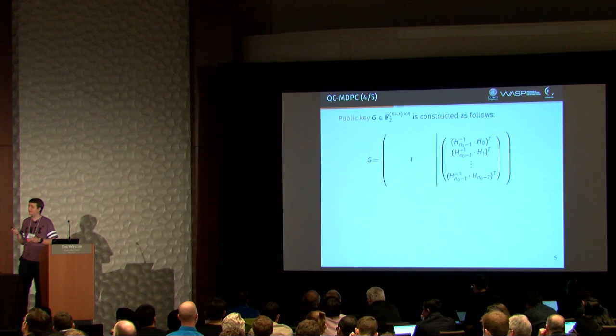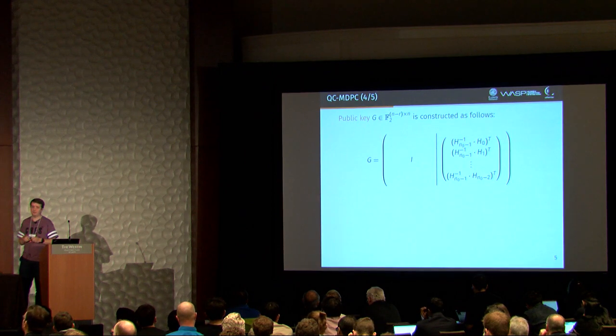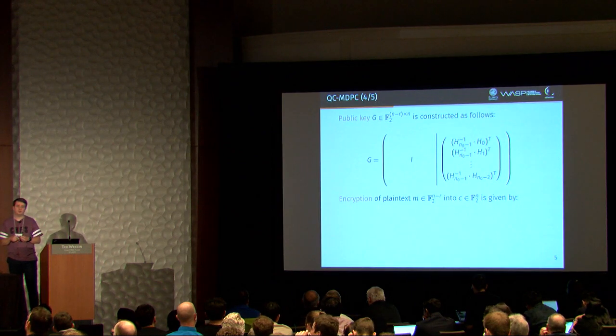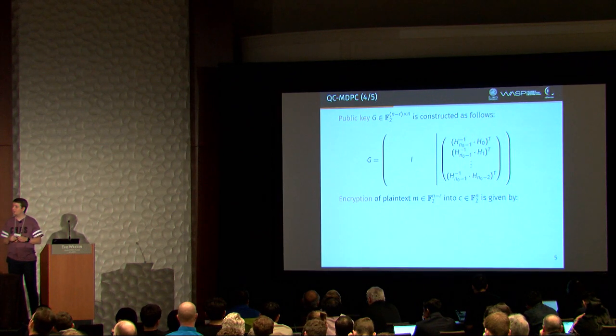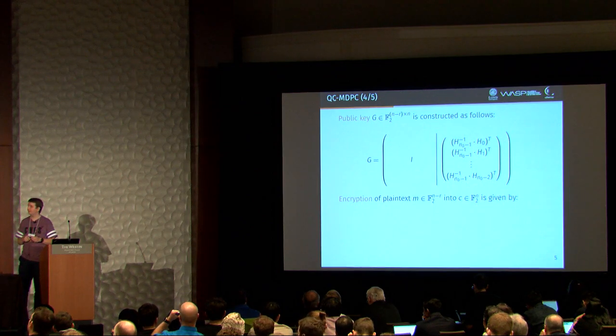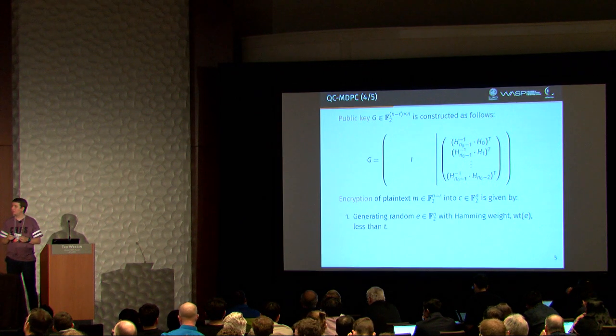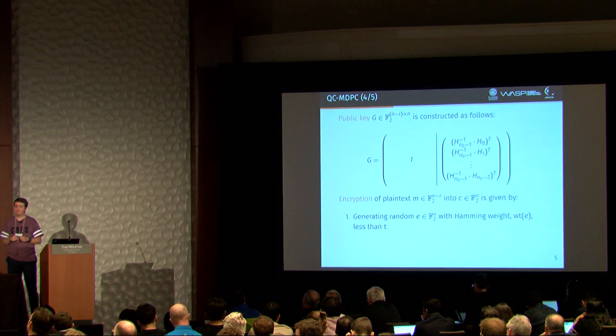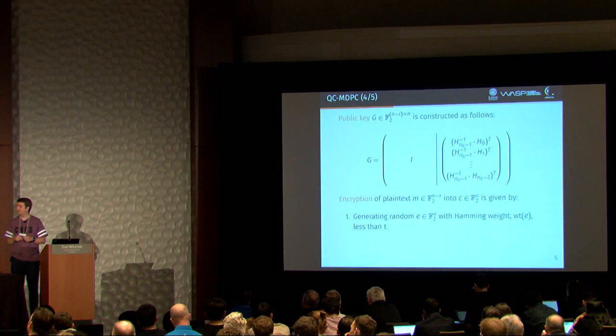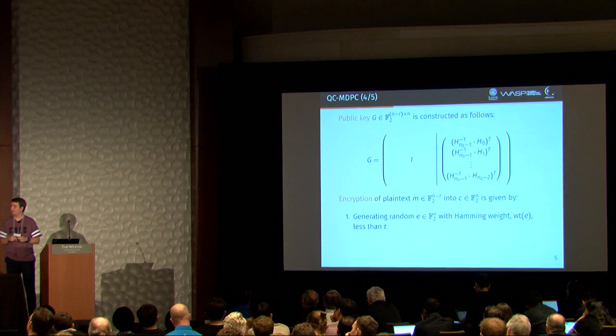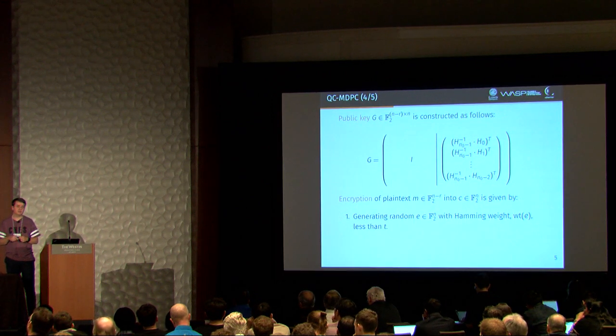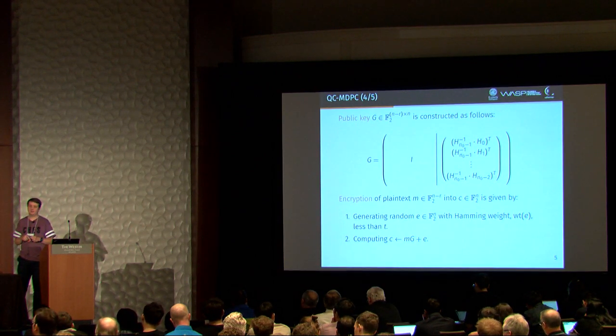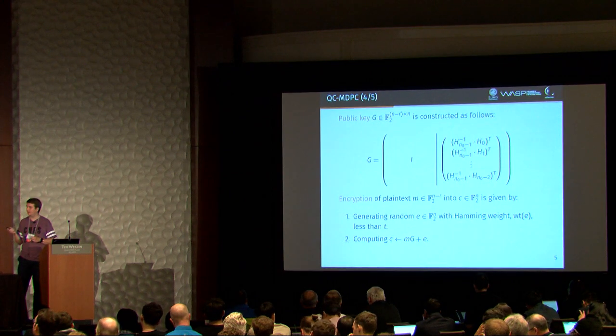The public key is the generator matrix, and it's constructed like this, where I is an identity matrix. And now we have everything we need in order to perform an encryption. So to encrypt a plaintext M into a ciphertext C, we only need to find or generate a random error vector with a Hamming weight less than or equal to the error correction capability of the code. And then we simply compute the plaintext times the generator matrix and add this error vector.